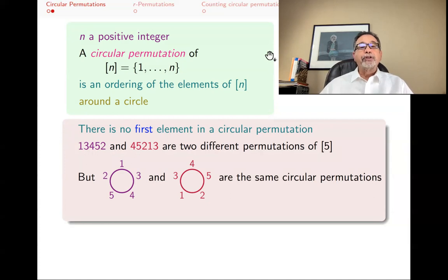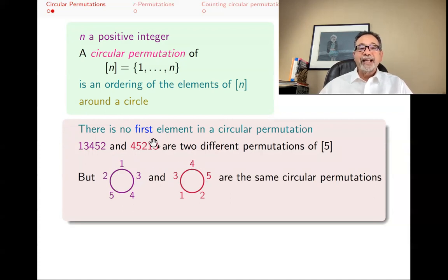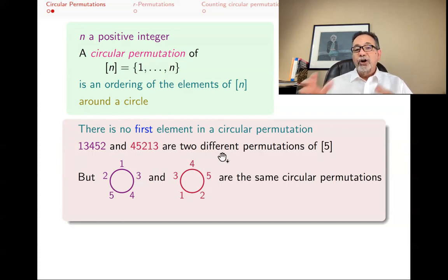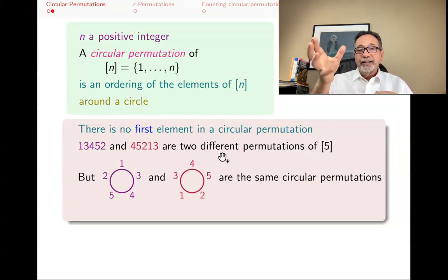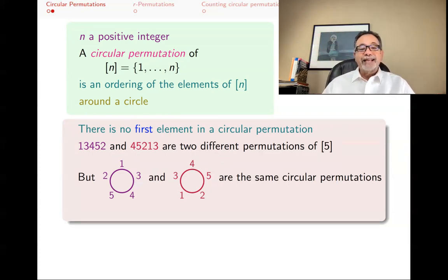If you go clockwise, the first one, starting with 1, is 1,3,4,5,2. The second one is 4,5,2,1,3. But if you start reading the second one from 1, it's again 1,3,4,5,2 — they just keep walking a little bit around the circle and they are exactly the same as each other.